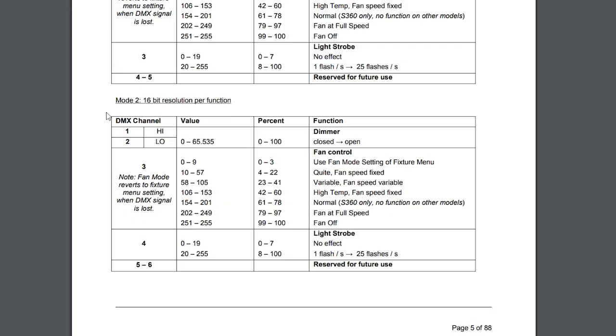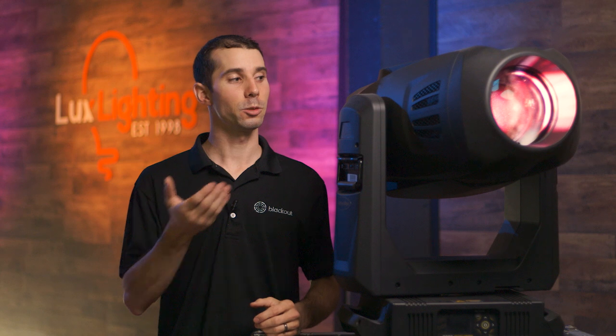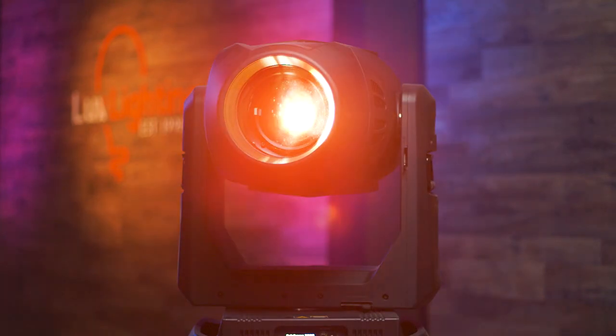Additionally, some modes allow for 16-bit control, which means instead of one parameter being controlled by one channel, one parameter is now controlled by two channels working conjunctively. A DMX channel has a value from 0 to 255 — that's 256 steps. This moving light can pan 540 degrees, which means that I wouldn't even be able to pan it in increments of one degree because there's not enough steps. That's where 16-bit control comes in.